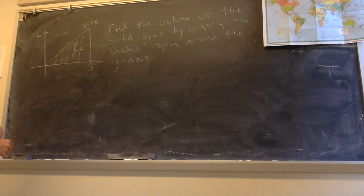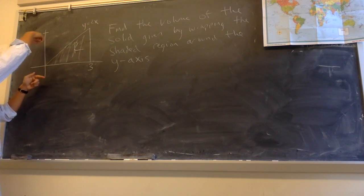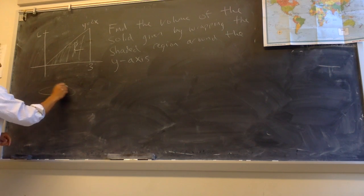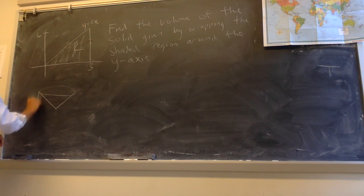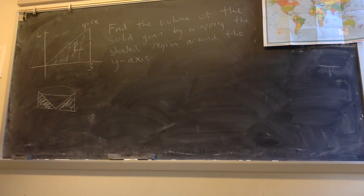So what happens if we're wrapping this region around the y-axis like this is the solid that's given is sort of what looks like stadium seating type of thing. You get this cone with the region that's given at the outside, something like that.